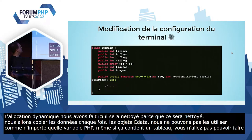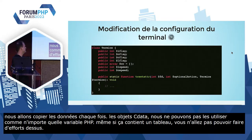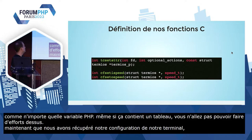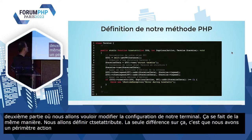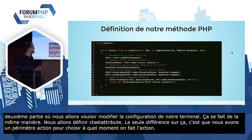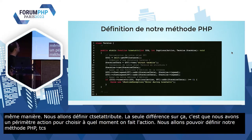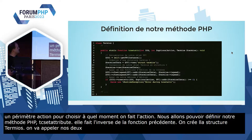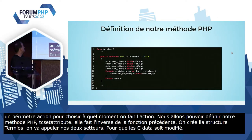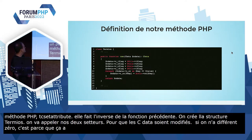Maintenant qu'on a récupéré la configuration de notre terminal, on passe à la deuxième partie : modifier la configuration. Ça se fait relativement de la même manière. On va définir tcsetattr et nos deux setters pour la vitesse. La seule différence sur tcsetattr, c'est qu'on a un paramètre en plus, optional_action, qui définit à quel moment on va changer la configuration — si on attend que les buffers soient vides ou si le changement se fait instantanément. Notre méthode PHP tcsetattr fait exactement l'inverse : on crée une structure Termios, on la remplit depuis notre objet passé en paramètre, on appelle nos deux setters pour modifier les valeurs dans le CData, puis on appelle tcsetattr. Si ça retourne quelque chose de différent de zéro, on retourne une exception.